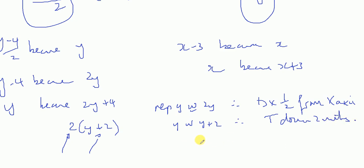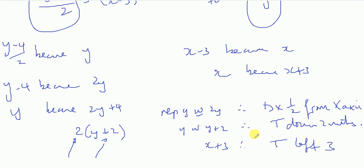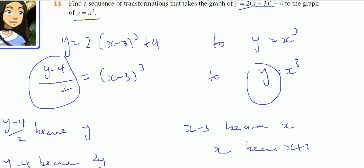And when you replace x with x plus 3, therefore it's a translation left 3 units. And there are the three transformations, 1, 2, 3 in that order, that takes this cubic to this cubic.